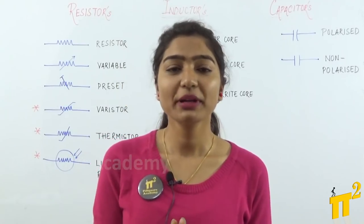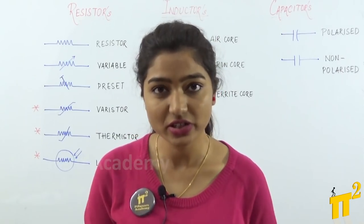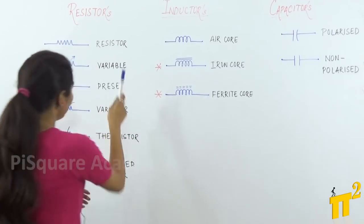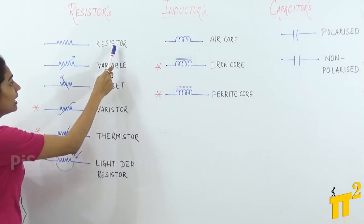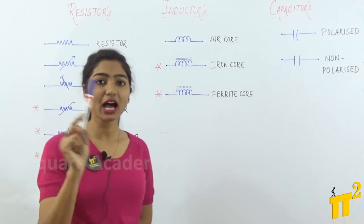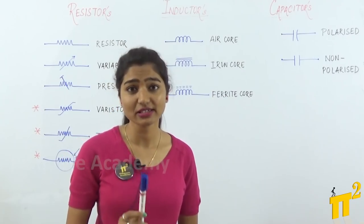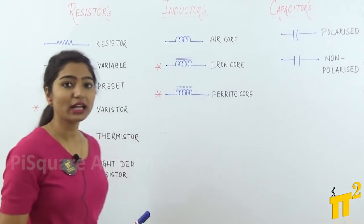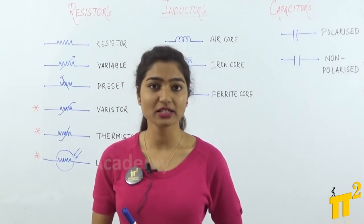The first topic we will be taking up is the most lovable resistor. The common symbol of a resistor is shown here. Then this is the symbol of a variable resistor. Whenever you have an arrow on the resistor, that indicates a variable resistor. The third one is a preset, which is also a kind of variable resistor.